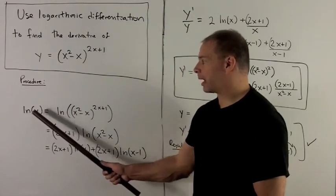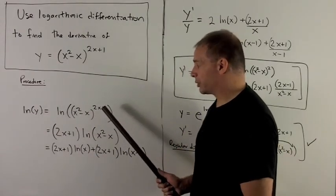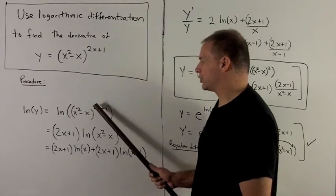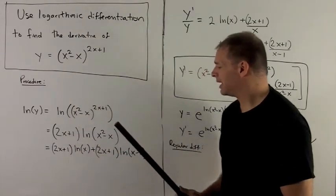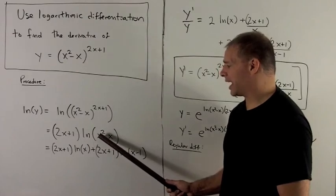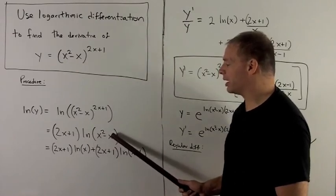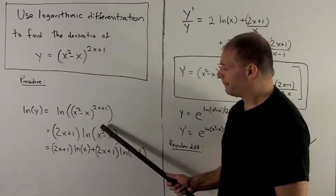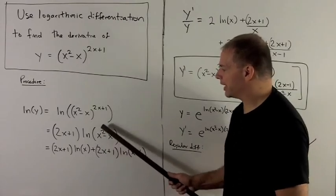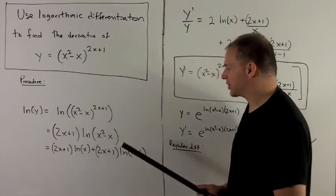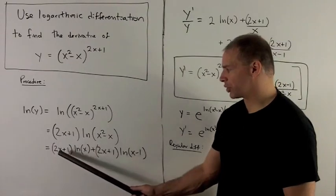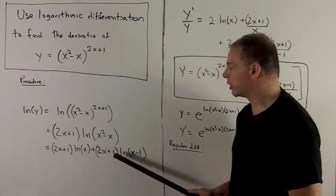So natural log of both sides. The exponent rule for natural log says I could take that 2x plus 1, bring it in the front. And then here we could factor this as x times x minus 1. So that's going to be able to break up because products on the inside go to the outside as sums. And then I just have to make sure I distribute the 2x plus 1 to each term.